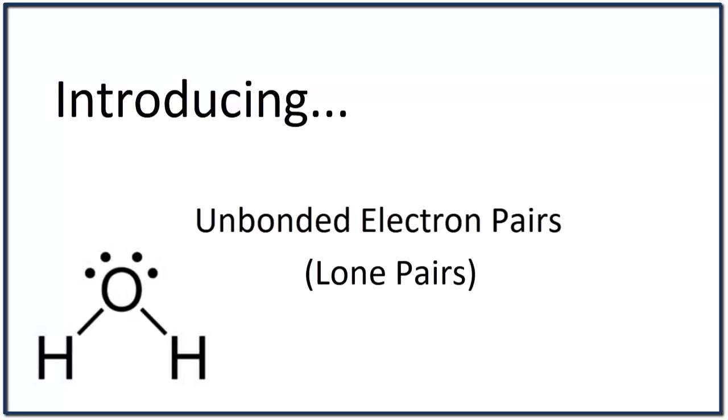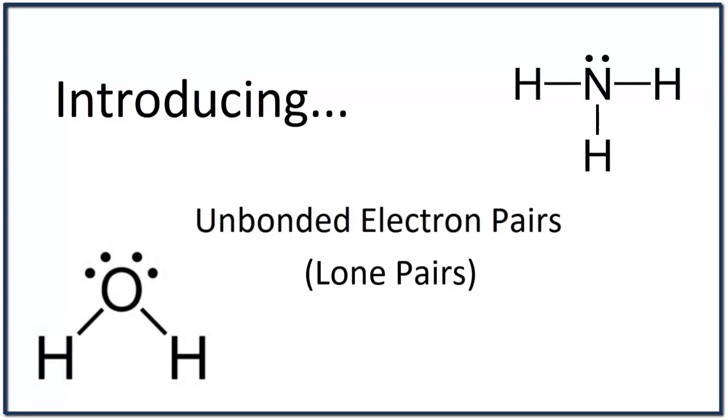Up until now, we've only talked about electrons that are between atoms. They're bonded electron pairs. We also have pairs of electrons that are called unbonded electron pairs, or lone pairs. They are not in between atoms, but they do have their own orbitals. And that means they influence the shape, the polarity, and the symmetry of a molecule.